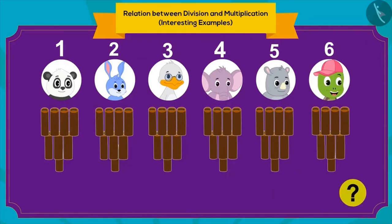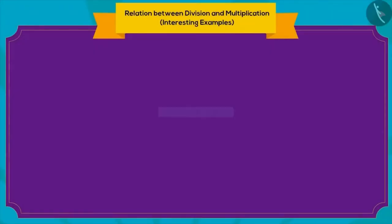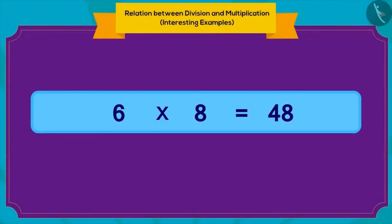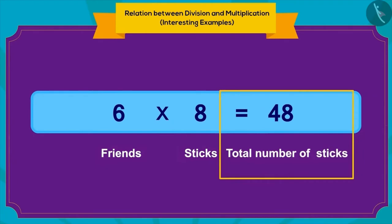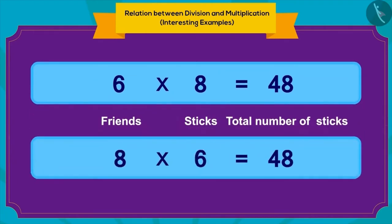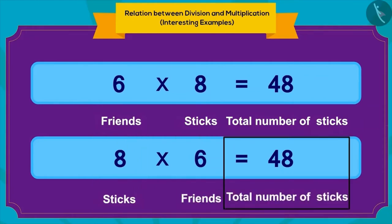How can we write this in the form of multiplication? Absolutely correct! We can write it in terms of multiplication like this. If there are six friends and each friend is given eight sticks, then total number of sticks will be 48. Or, if each friend is given eight sticks and the number of friends is six, then the total number of sticks will be 48.